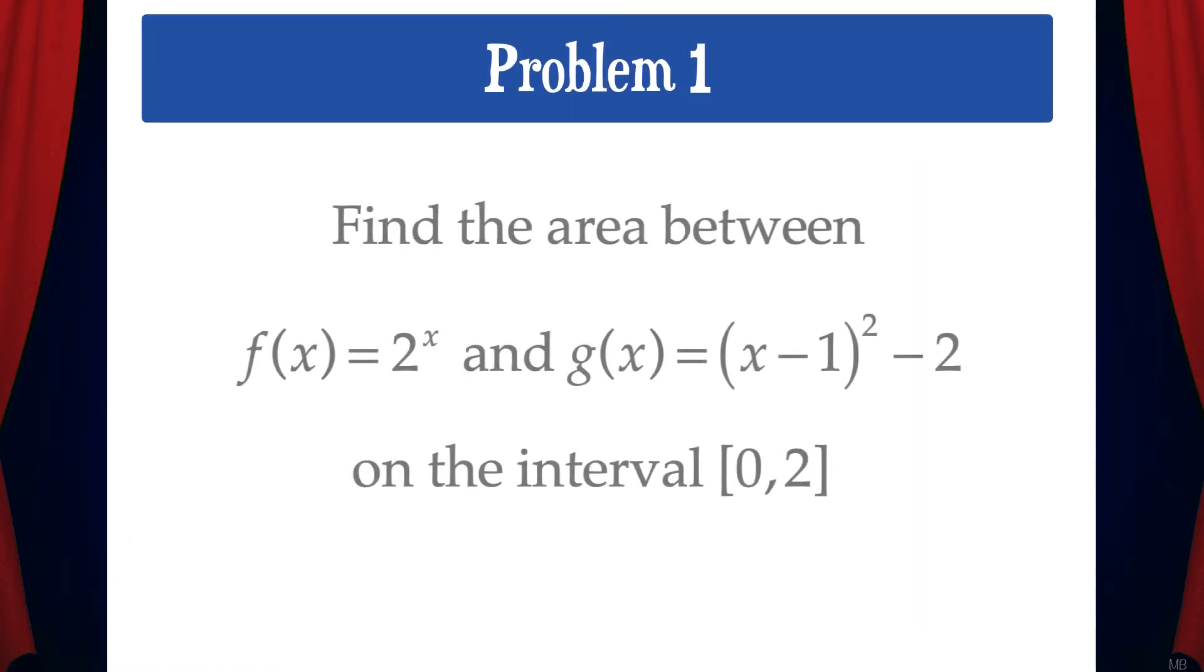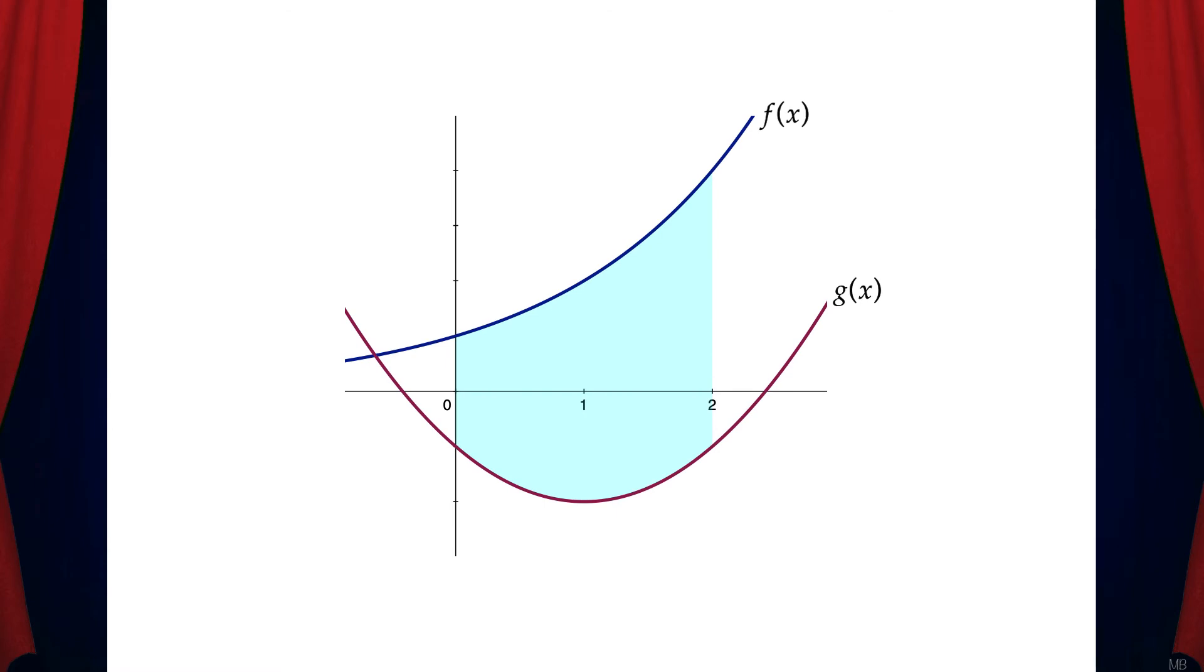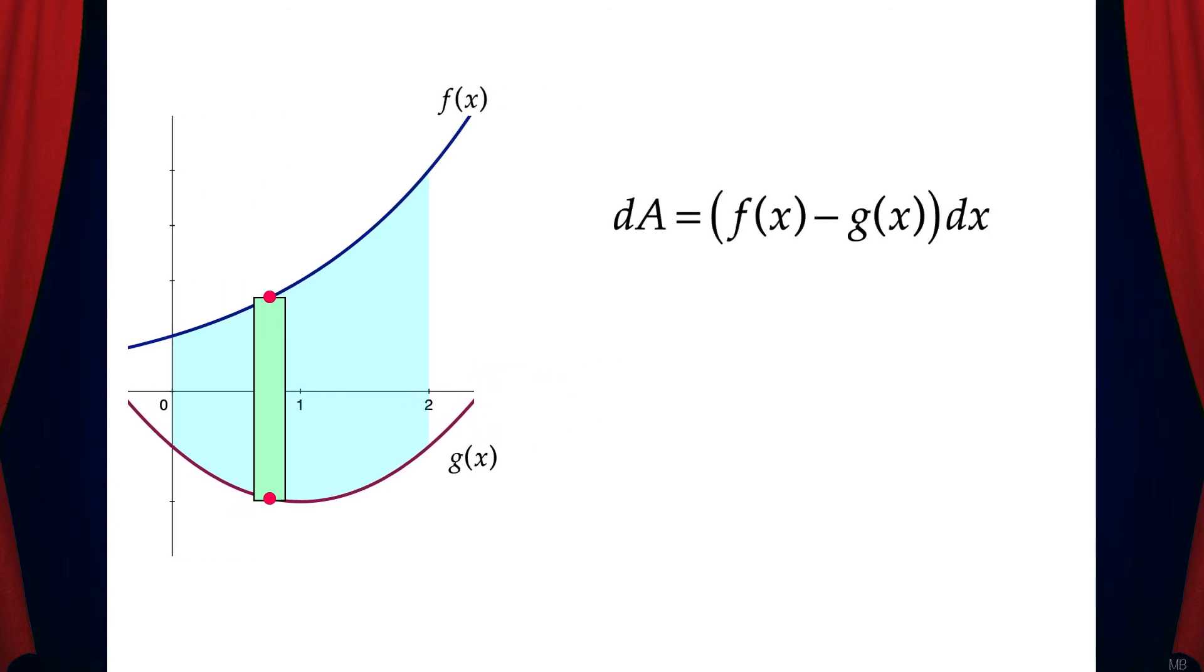Let's do an example problem. Find the area between f(x) = 2^x and g(x) = (x-1)² - 2 on the interval [0,2]. The first thing we'll do is draw a sketch and then determine the orientation of a sample rectangle. Since the first curve is always above the second curve, we can use vertical rectangles. So that means dA equals the quantity of f(x) minus g(x) dx. That's the area of one sample rectangle.